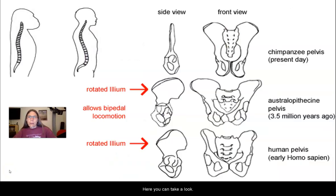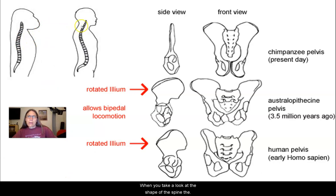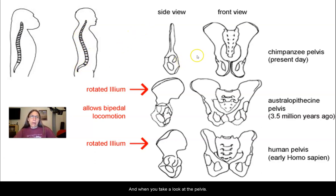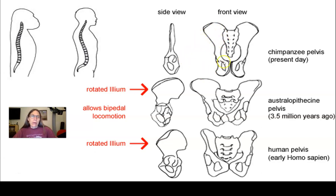Looking again at specific anatomical differences: the hominin has an S-shaped spine, and the pelvis changes from an elongated shape to one that is much shorter and more bowl-shaped.